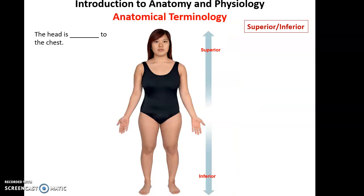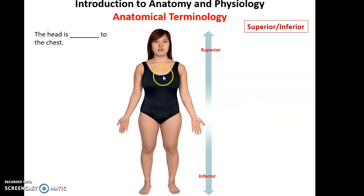Then we have superior versus inferior. Superior means toward the top or head of the body; inferior means toward the bottom or feet. The head is superior to the chest. The urinary bladder is inferior to the heart — it is closer to the feet than the heart is.